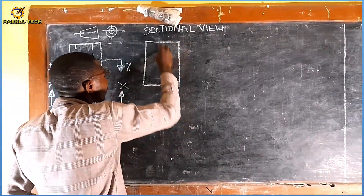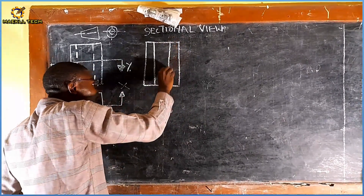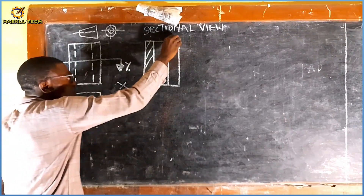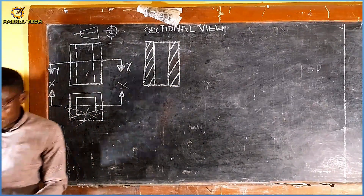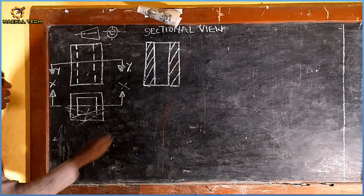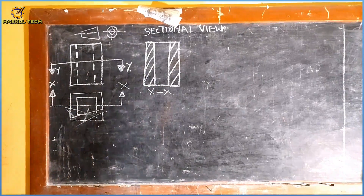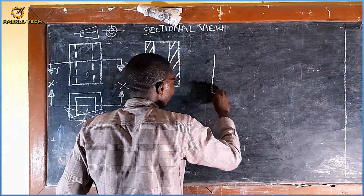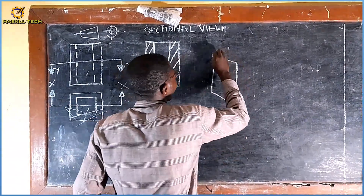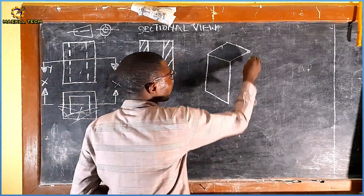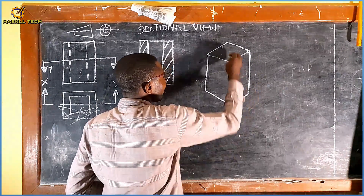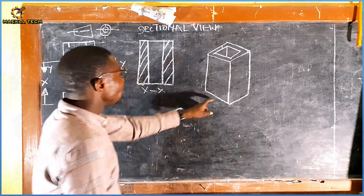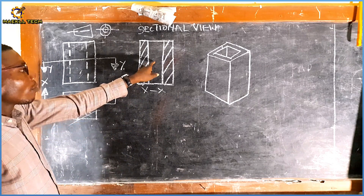Section XX is going to give me this view. I will section this area like this — just relax, I will explain. Let me show you how this object looks like in pictorial view to explain what I'm trying to show. So let me produce the pictorial view to see what I'm trying to explain — and we have this on the inside of the object. This is the pictorial view of this particular object.